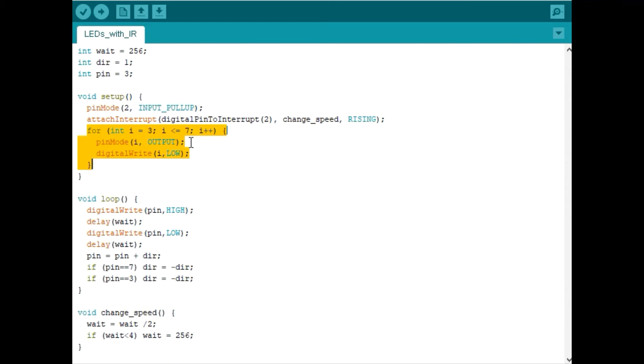Also here in our setup loop we will set our LED pins, pins 3 through 7 as outputs, and we'll initialize them to be off.